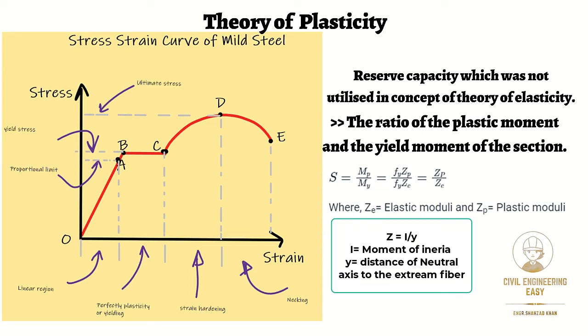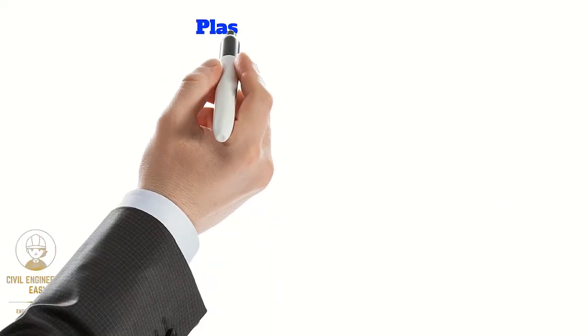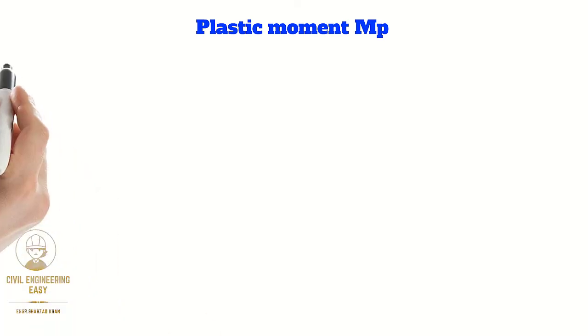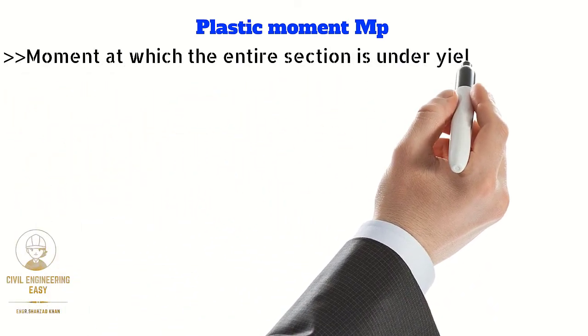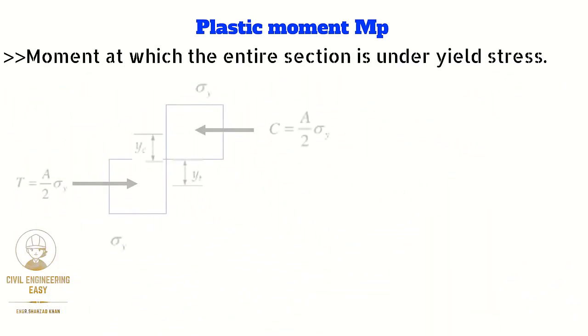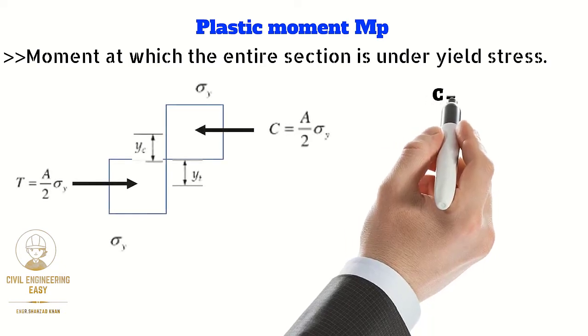Where Mp is the moment at which the entire section is under yield stress, and My is the moment at which the section yields. Let's discuss about the plastic moment. Plastic moment is the moment at which the entire section is under yield stress, that is, the compressive force equals the tensile force.